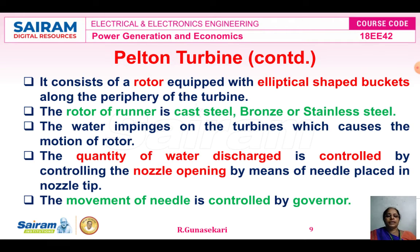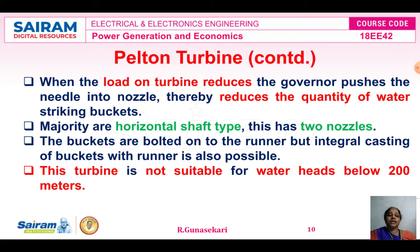The movement of the needle is controlled by the governor — the same governing principle we studied earlier. When the load on the turbine reduces, the governor pushes the needle into the nozzle, thereby reducing the quantity of water. The Pelton (Belt and Wheel) turbine is predominantly a horizontal shaft type and has two nozzles. The elliptical-shaped buckets are bolted onto the runner, though integral casting of the buckets with the runner is also possible. The Pelton turbine is not suitable for water heads below 200 meters; it is used above 200 meters.